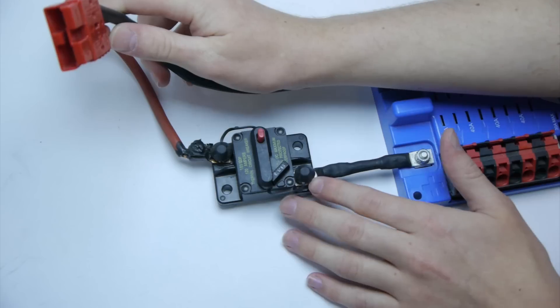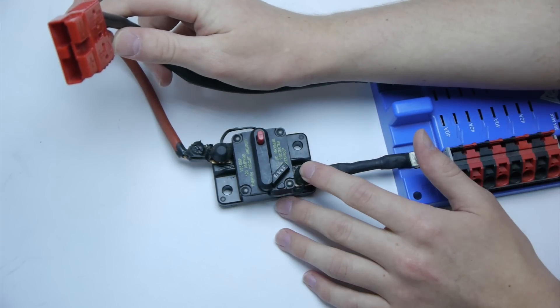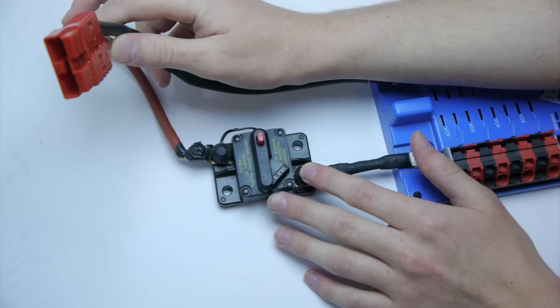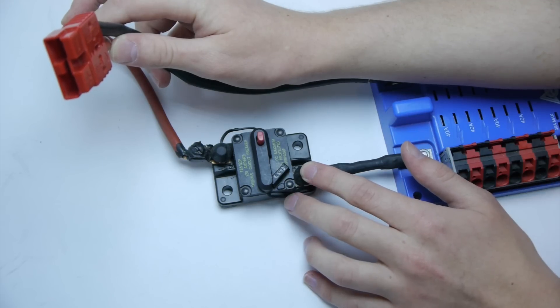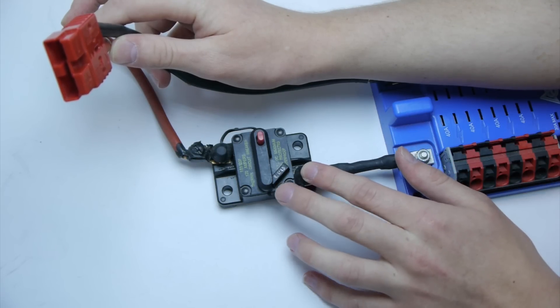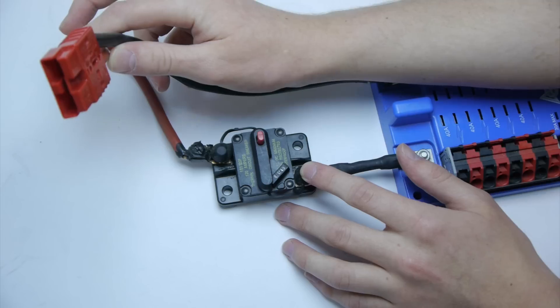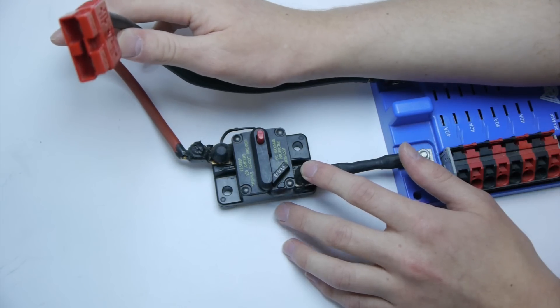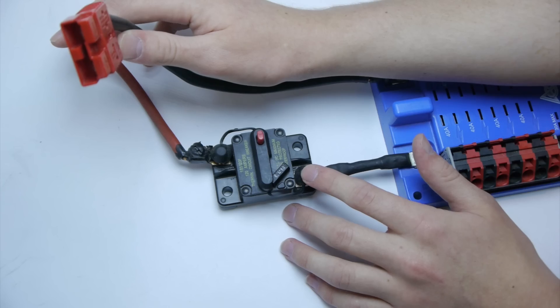This is a 120-amp breaker. This is what you use to turn your robot on and off. This breaker will trip when your robot draws over 120 amps. Usually, if something draws that much current, something's wrong or it's shorting out. This will trip and prevent your robot from catching on fire or shocking someone.